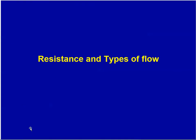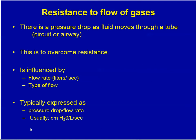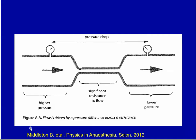The first topic is resistance and types of flow. Resistance to the flow of gases is manifested by a slight pressure drop. This pressure drop is to overcome resistance. Resistance is influenced by the flow rate and by the type of flow. It's typically expressed as pressure drop per flow rate, usually centimeters of water per liter per second. This is an illustration of how there is a pressure drop across an area of resistance.